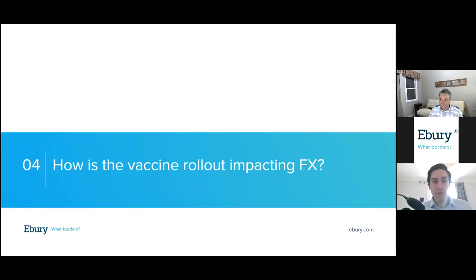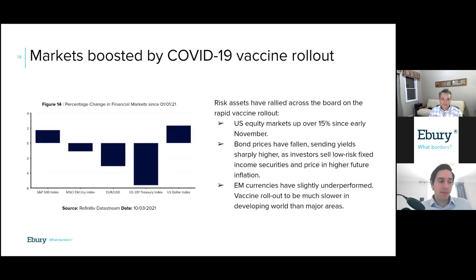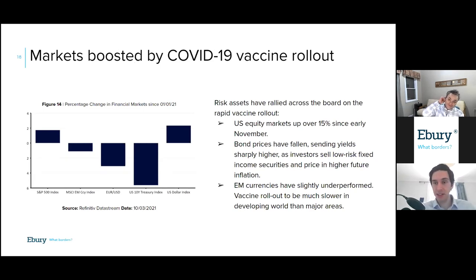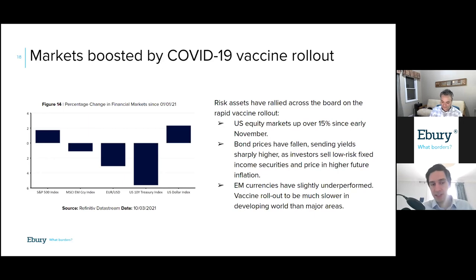A big question now is what kind of impact the vaccine rollout is having on financial markets — particularly in FX. The market reaction has been positive. Both the approval, distribution, and pace of vaccinations have been much faster than the market had expected late last year. We're also seeing some very encouraging data on vaccine efficacy — truly nothing short of miraculous — and the market has responded by favoring risk assets since the beginning of the year. The S&P 500 is up around 15 percent since early November and around two percent so far in 2021.